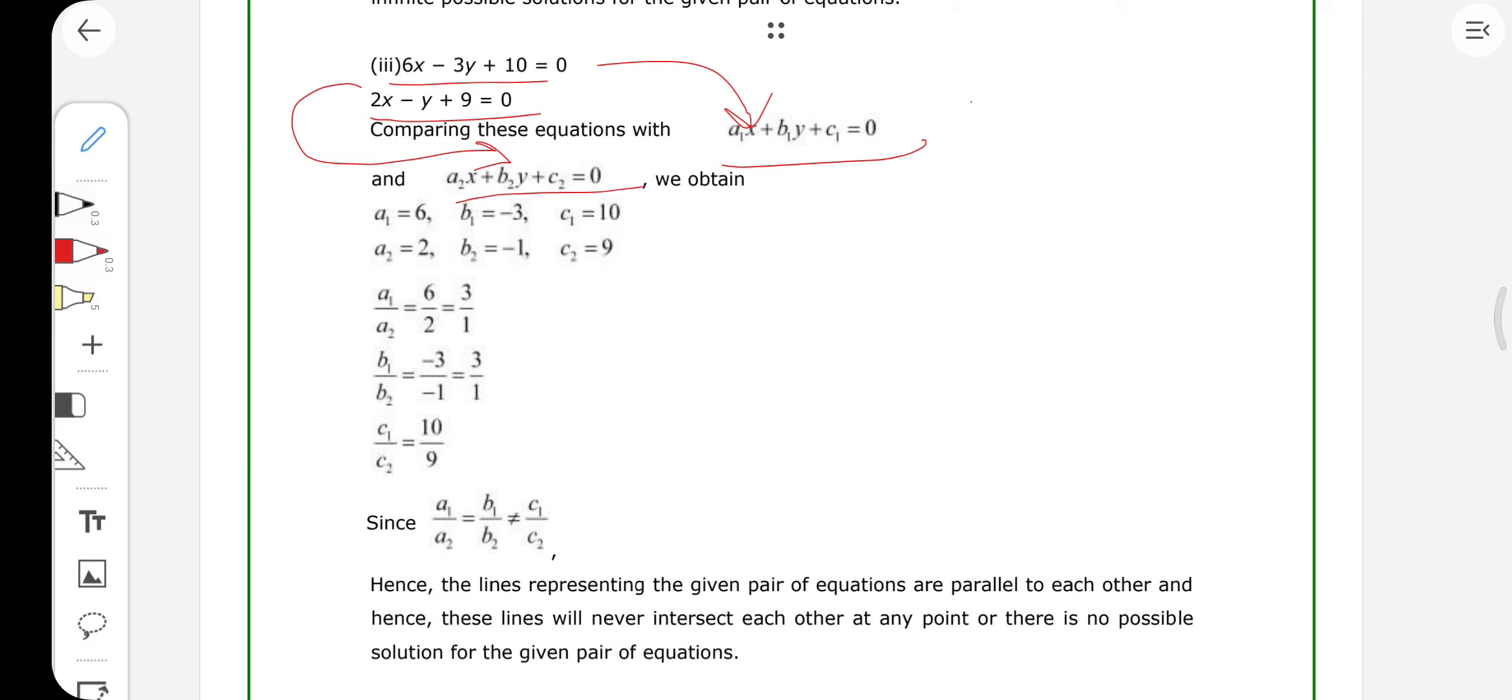After comparing these equations, we will get the values of some variables. These are a1 equals 6, b1 equals minus 3, and c1 equals 10. Similarly, we have a2 equals 2, b2 equals minus 1, and c2 equals 9.